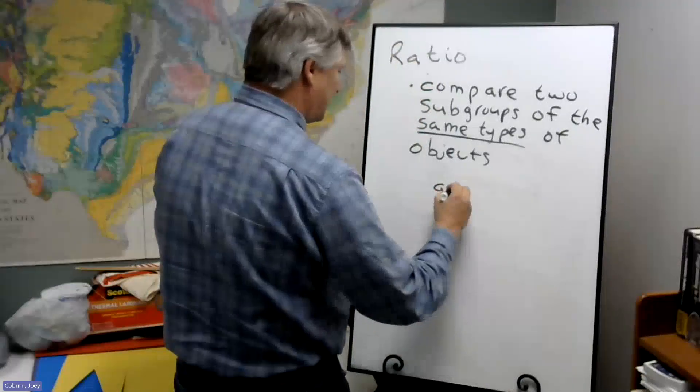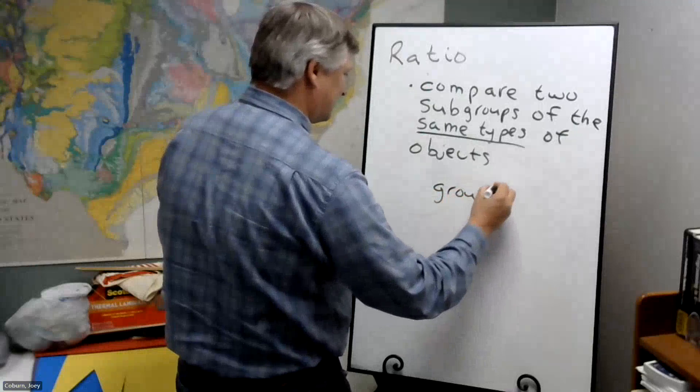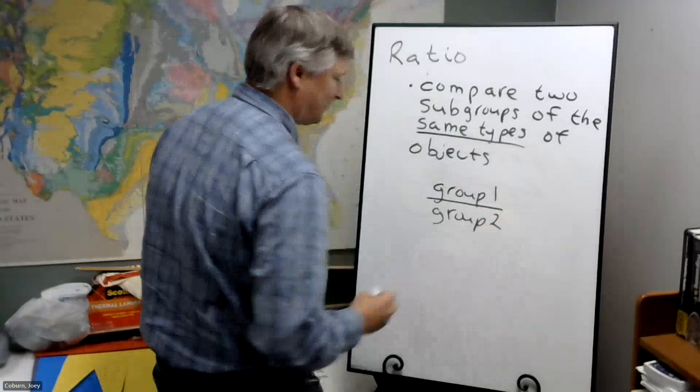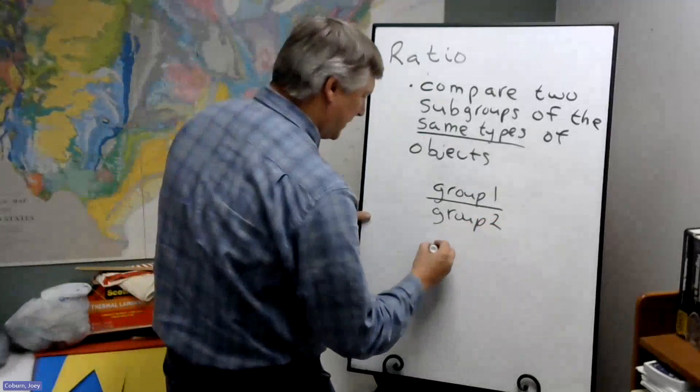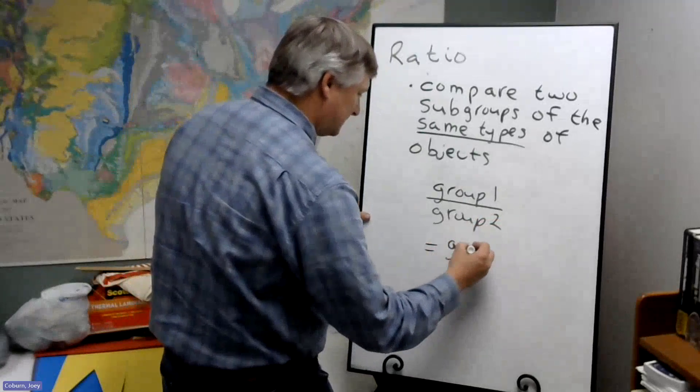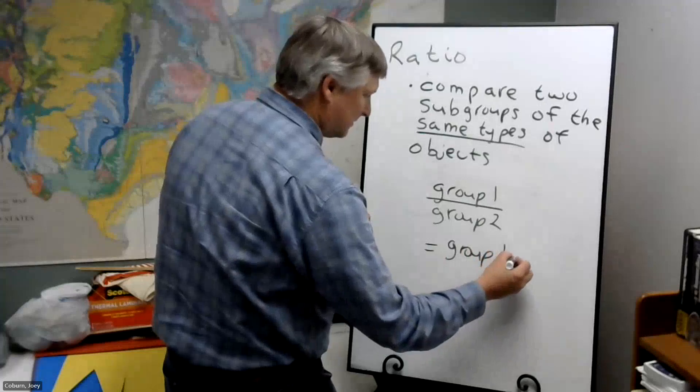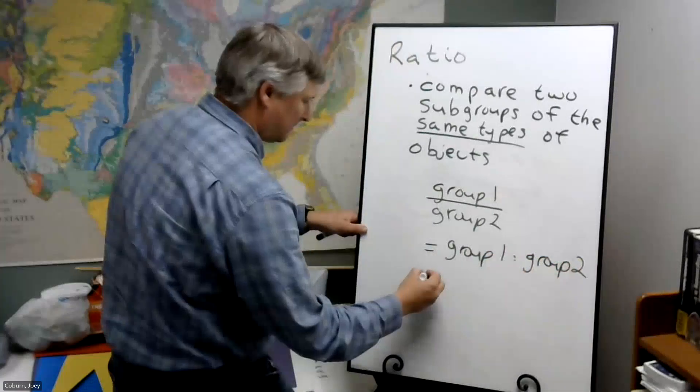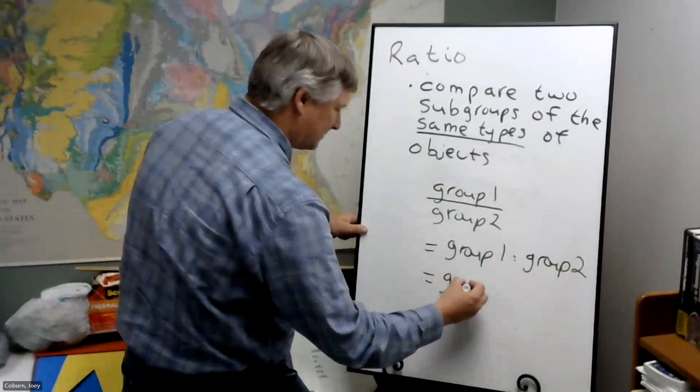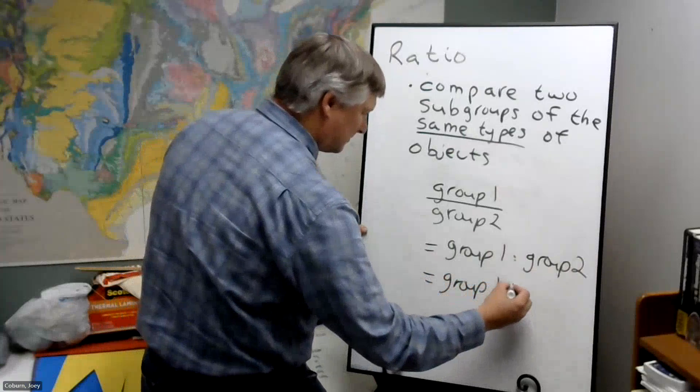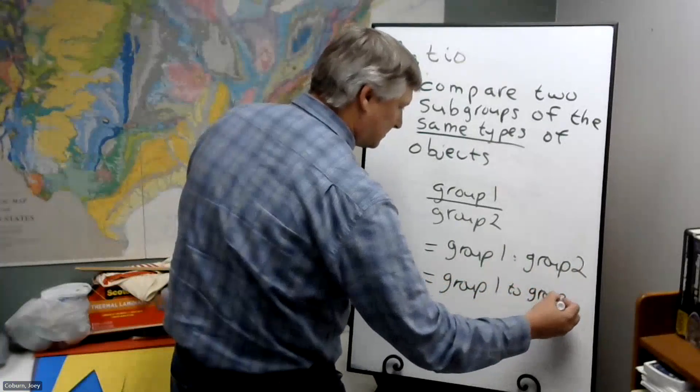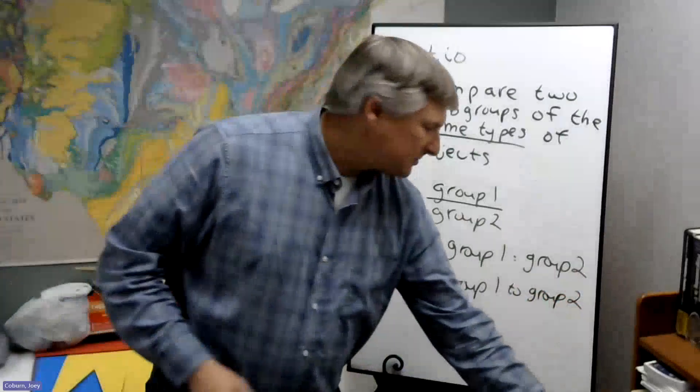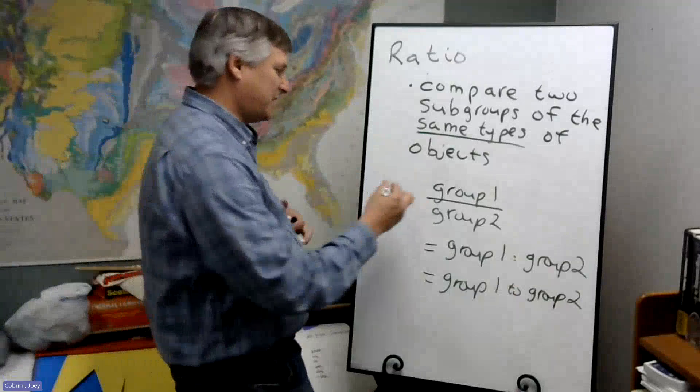So we would say like group 1 over group 2. And then we can rewrite this as group 1 colon group 2, or group 1 to group 2. But these two groups, these two subgroups, I should say.